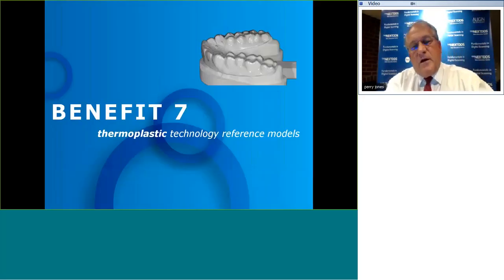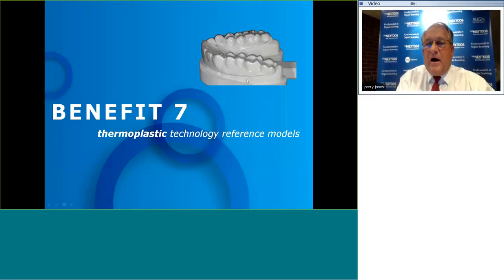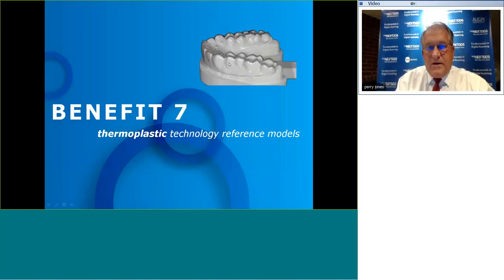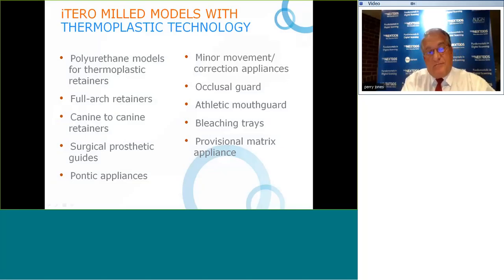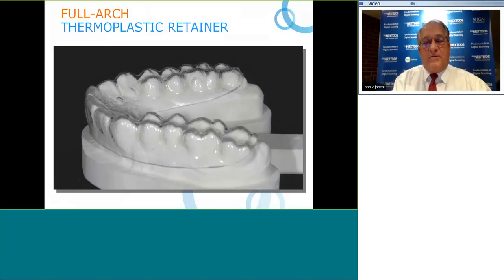Benefit number seven: thermoplastic technology on reference models. On the screen is a milled model from iCero with a retainer made of thermoplastic material. On polyurethane milled models we can make: canine-to-canine retainers, full arch retainers, surgical prosthetic guides, pontic appliances, movement appliances, occlusal guards, athletic mouth guards, bleaching trays, and provisional matrices.